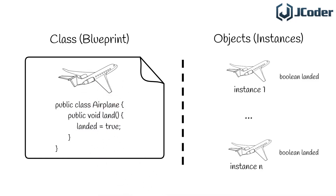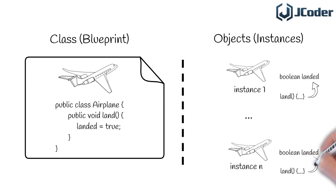Let's recap our land method — it's a very simple method. All it does is change the landed variable to true. And this is where the difference between each of the methods lies. The landed variable that the land method of the first airplane will change is the landed variable that belongs to that object, not the ones from airplane two or airplane three. Now, what happens if we have a static method? We are telling the compiler that the method belongs to the class itself. So there is only a single version of that method, no matter how many airplane objects we create. This also means that a static method cannot access non-static fields, because that static method is not associated with any object, so it wouldn't know what fields to change.